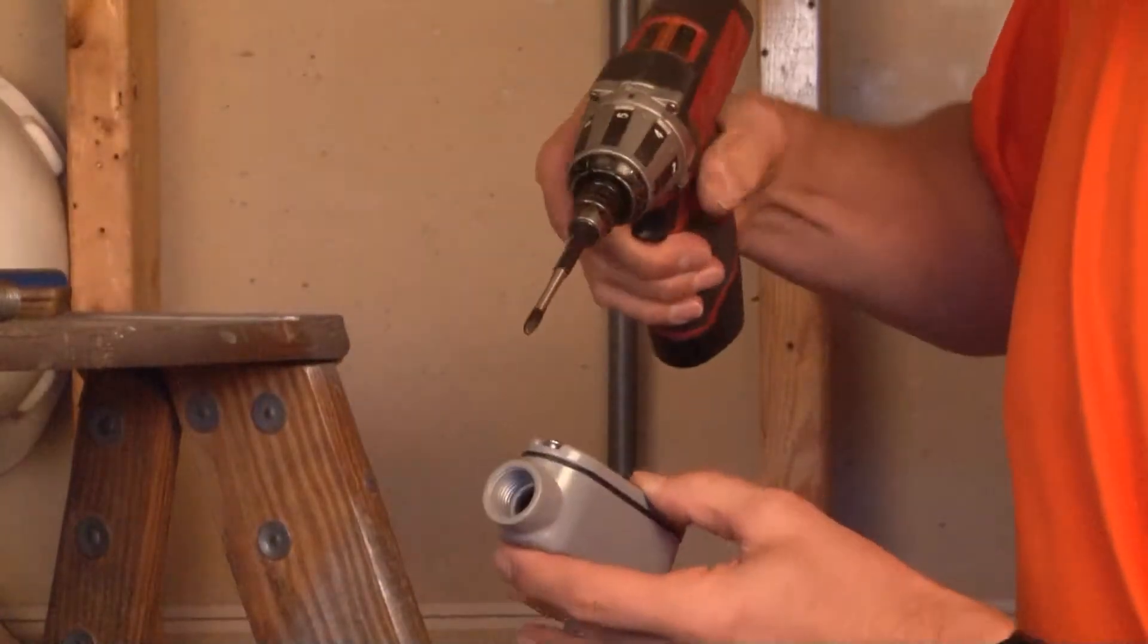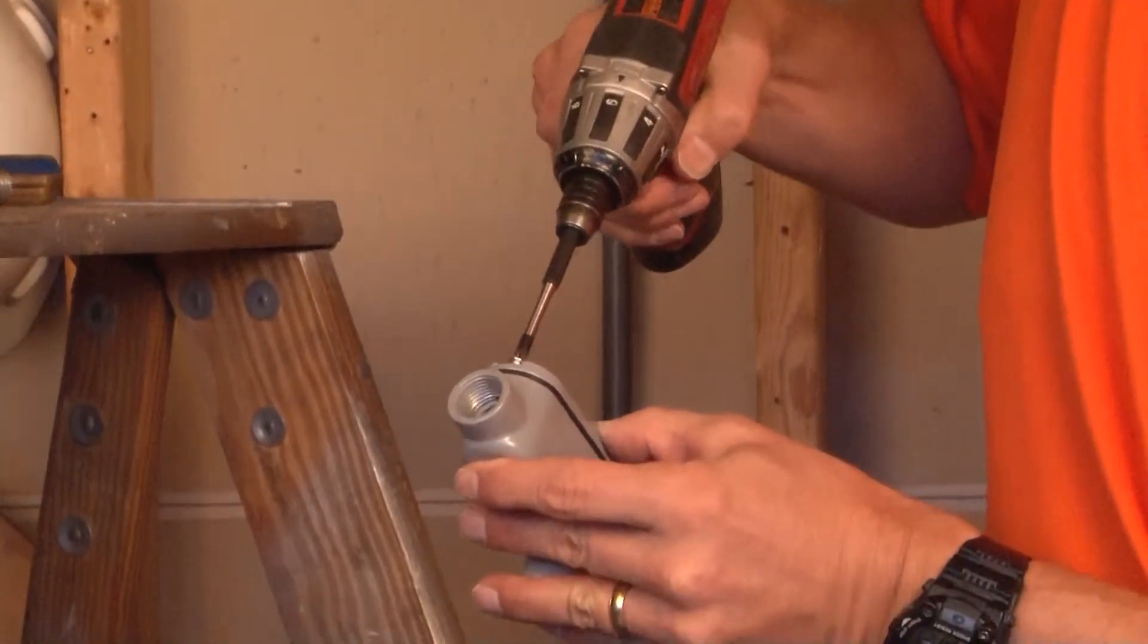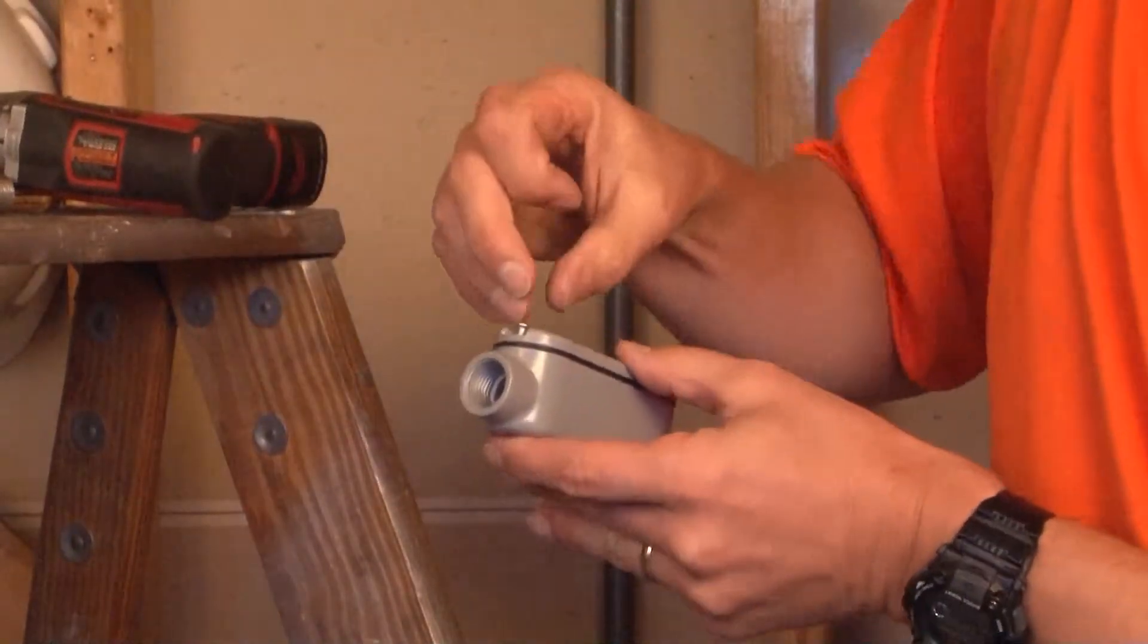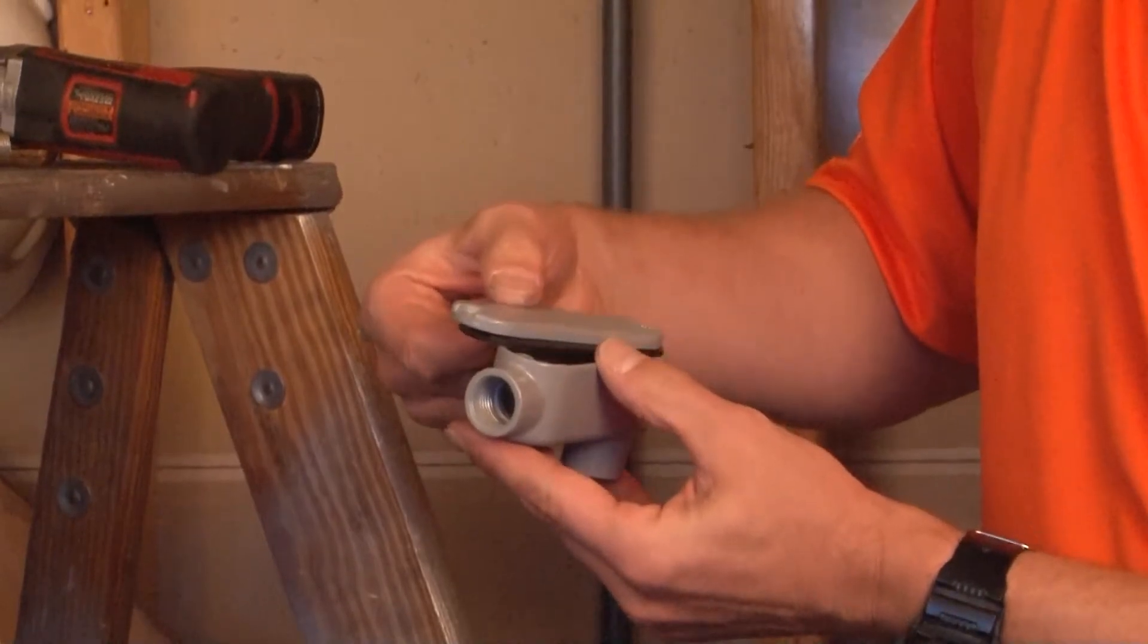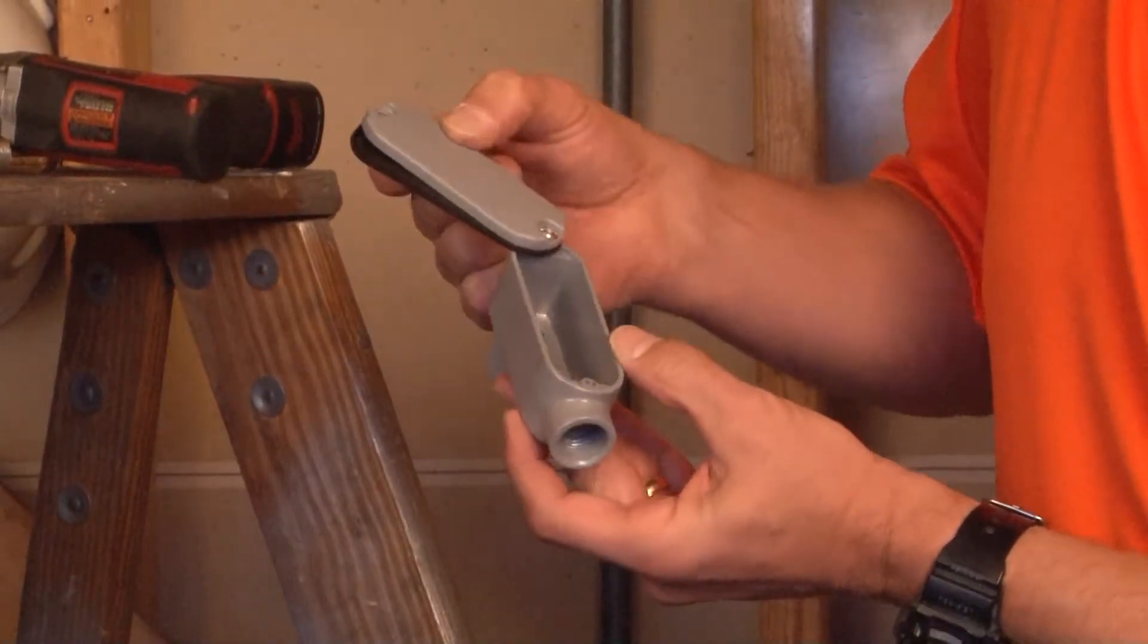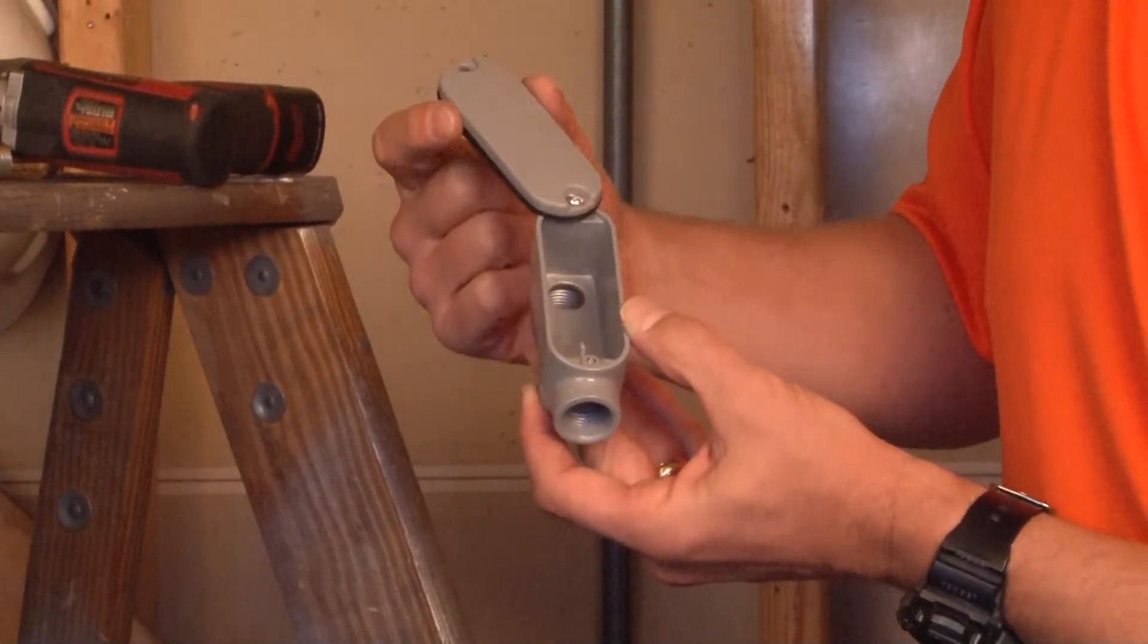The most common way of using it is to simply remove the cover and gasket by loosening the two screws. You can then see inside the conduit body.